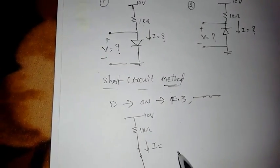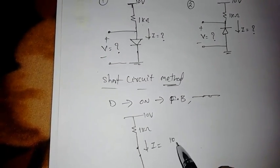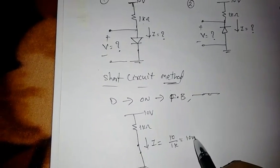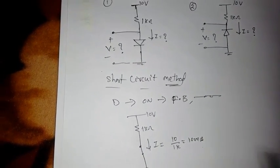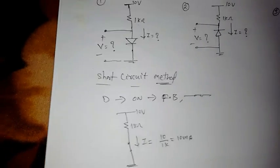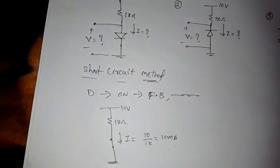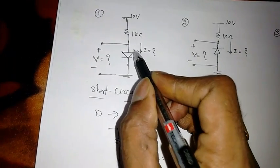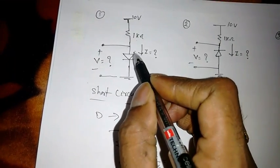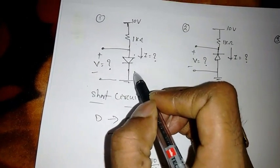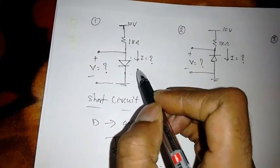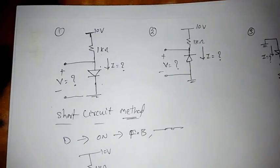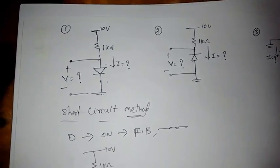Now I can easily find what is I. I is equal to simply 10 divided by 1 kilo ohm, so it is 10 milliampere of current flowing. Whatever we assumed — that current should flow from anode to cathode, or positive to negative — that assumption is correct.